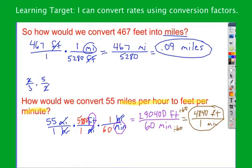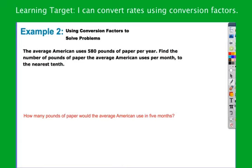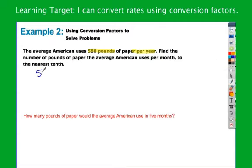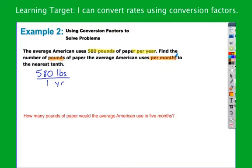Let's get a little more practical. The average American uses 580 pounds of paper per year. First, identify the rate they're giving: 580 pounds per year. They want me to change that to pounds per month. I start by writing my beginning ratio: 580 lbs over 1 year. Think about how many changes we need — I don't need any change in the numerator because I have pounds and I'm leaving it as pounds. I need one change in the denominator: change years to months. If I only need one change, I only need one conversion factor.